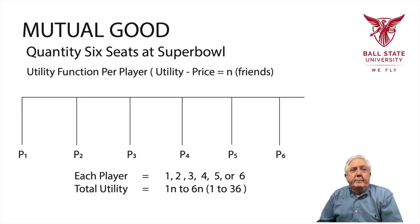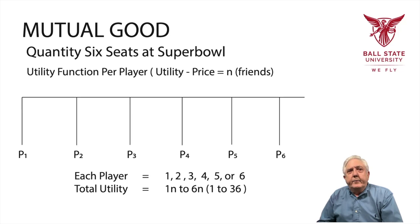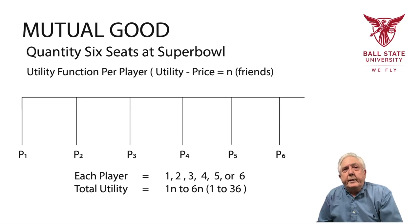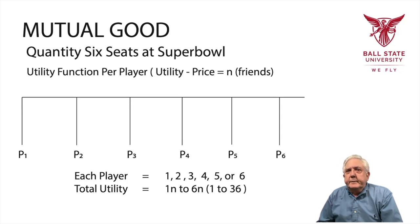Actually, it probably should be between 6 and 36, if they were all individual people at the Super Bowl — although they're going to get some benefit from just being in the crowd, from the fact that they're with other people consuming it with them. This would be particularly useful if they were together, or if they were having a party at one of their homes for the six of them.